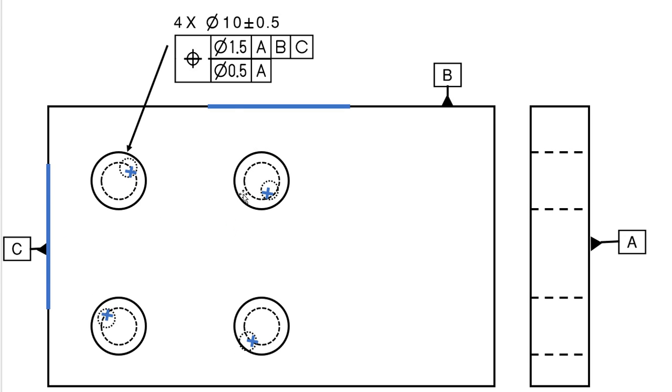So my part number two fails this evaluation, but it passes this evaluation. So that's how composite tolerance works. The upper tier locates the pattern with respect to the datums using either basic dimensions or CAD as master concept.